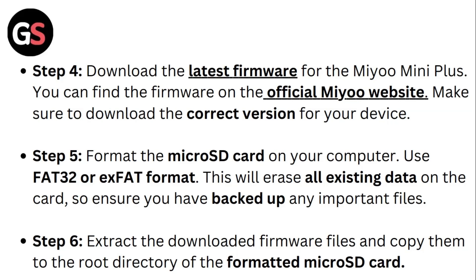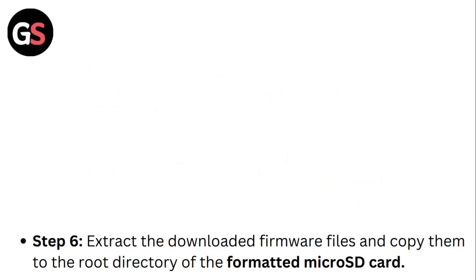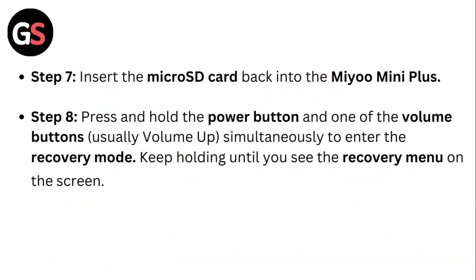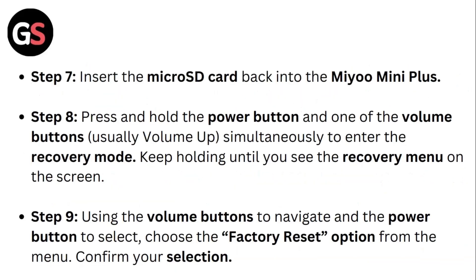Step 6: Extract the downloaded firmware files and copy them to the root directory of the formatted micro SD card. Step 7: Insert the micro SD card back into the Mio Mini Plus.